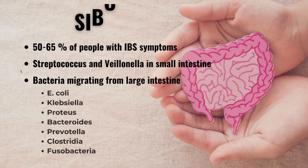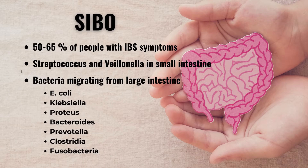Now let's take a closer look at each type of dysbiosis — how prevalent is each one, and what are the significant microbiological shifts in each case? For SIBO, about 50 to 65% of people with IBS symptoms have SIBO based on excess hydrogen or hydrogen sulfide production detected with breath testing.